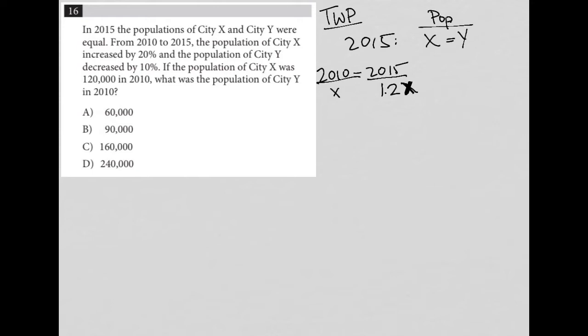For city Y, the population decreased by 10%. So whatever the population of city Y was in 2010 — which I'll call Y — in 2015 it's going to be 90%, or 0.9 times that value. 90% of Y is the same as 0.9 times Y.